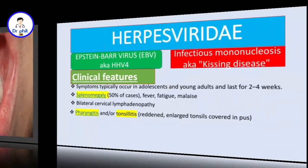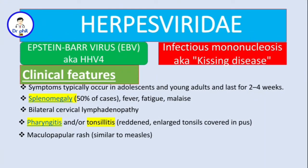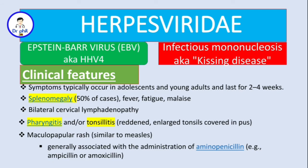Another symptom is a maculopapular rash, which is similar to measles. In 5% of cases this rash is caused by EBV infection, but in general this rash is associated with administration of aminopenicillins like ampicillin or amoxicillin. This is why misdiagnosing the pharyngitis and tonsillitis can be serious — it can lead to administration of the wrong therapy.